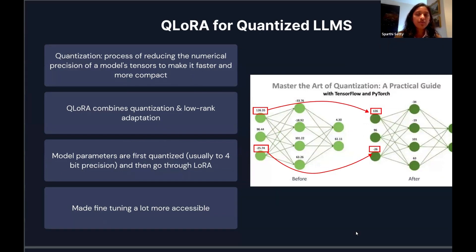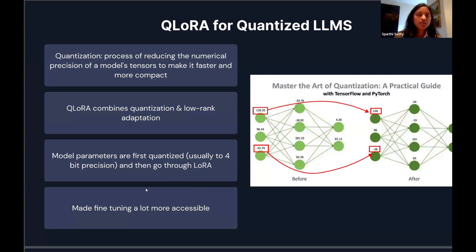To make it even more efficient if you have access to GPUs, you can use QLoRA, which undergoes a process called quantization. This reduces the precision of the weights — if stored at 16 bits, you can reduce that to 4-bit or 8-bit — significantly reducing memory requirements and making it more computationally efficient. Research has found that even though individual nodes become less precise, this doesn't lead to much difference in overall model performance.